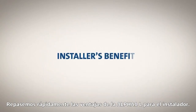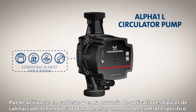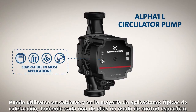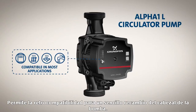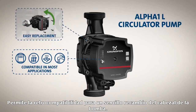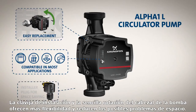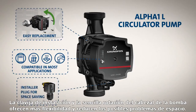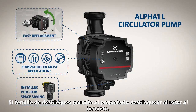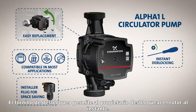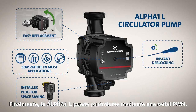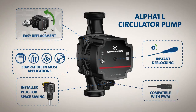Let's briefly go over the installer's benefits of the α1L one more time. It can be used in boilers and the most typical heating applications, each of which have a specific control mode. It offers backward compatibility for easy replacement of the pump head. An installer plug and the easy rotation of the pump head allows for more flexibility, reducing potential spatial problems. A de-blocking screw allows the homeowner to instantly de-block the rotor. And finally, the α1L can be controlled by a PWM signal.